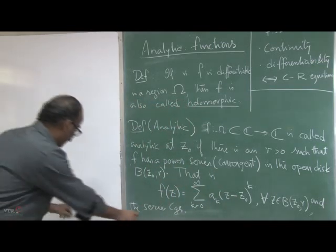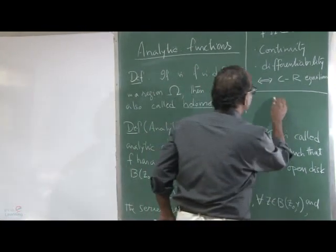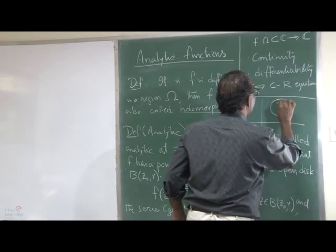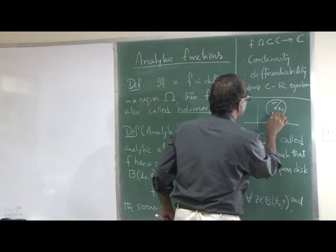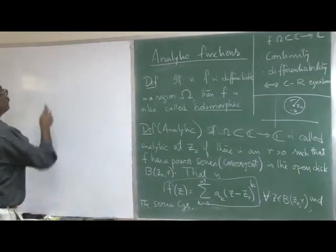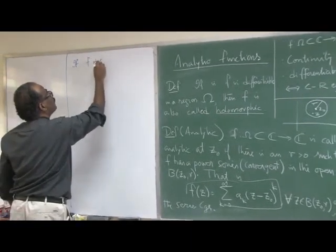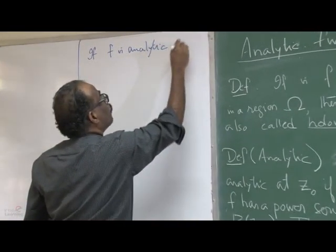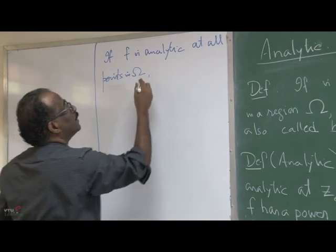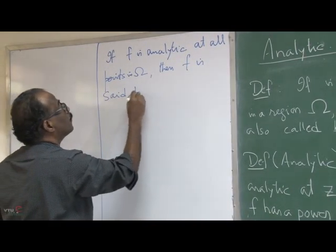The important thing is convergence at every point in the neighborhood. If f is analytic at z-naught, there is a neighborhood of radius r, and for every point z in that neighborhood, f(z) can be written in this power series form. And if f is analytic at all points in omega, then f is said to be analytic in omega.